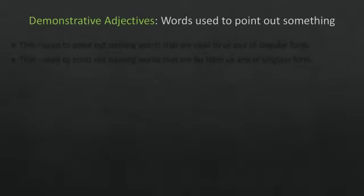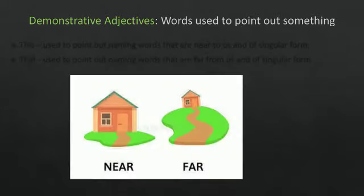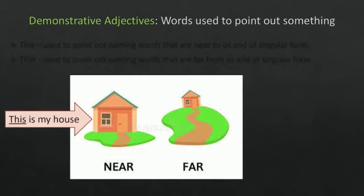Now, let us understand the demonstrative adjectives. Words used to point out something are called demonstrative adjectives. Here in this image, you can see there is one house which is near to us. So, we write it as this is my house.